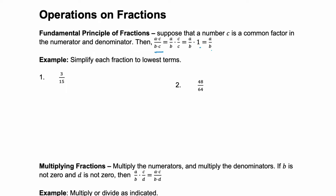Let's look at some real examples. 3 over 15. Well, 3 as factors is 1 times 3, and 15 is 5 times 3. Using that fundamental principle of fractions, that's the same as 1 over 5 times 3 over 3. But 3 over 3 is 1, and we know that anything times 1 is itself. So this simplifies to 1 fifth.